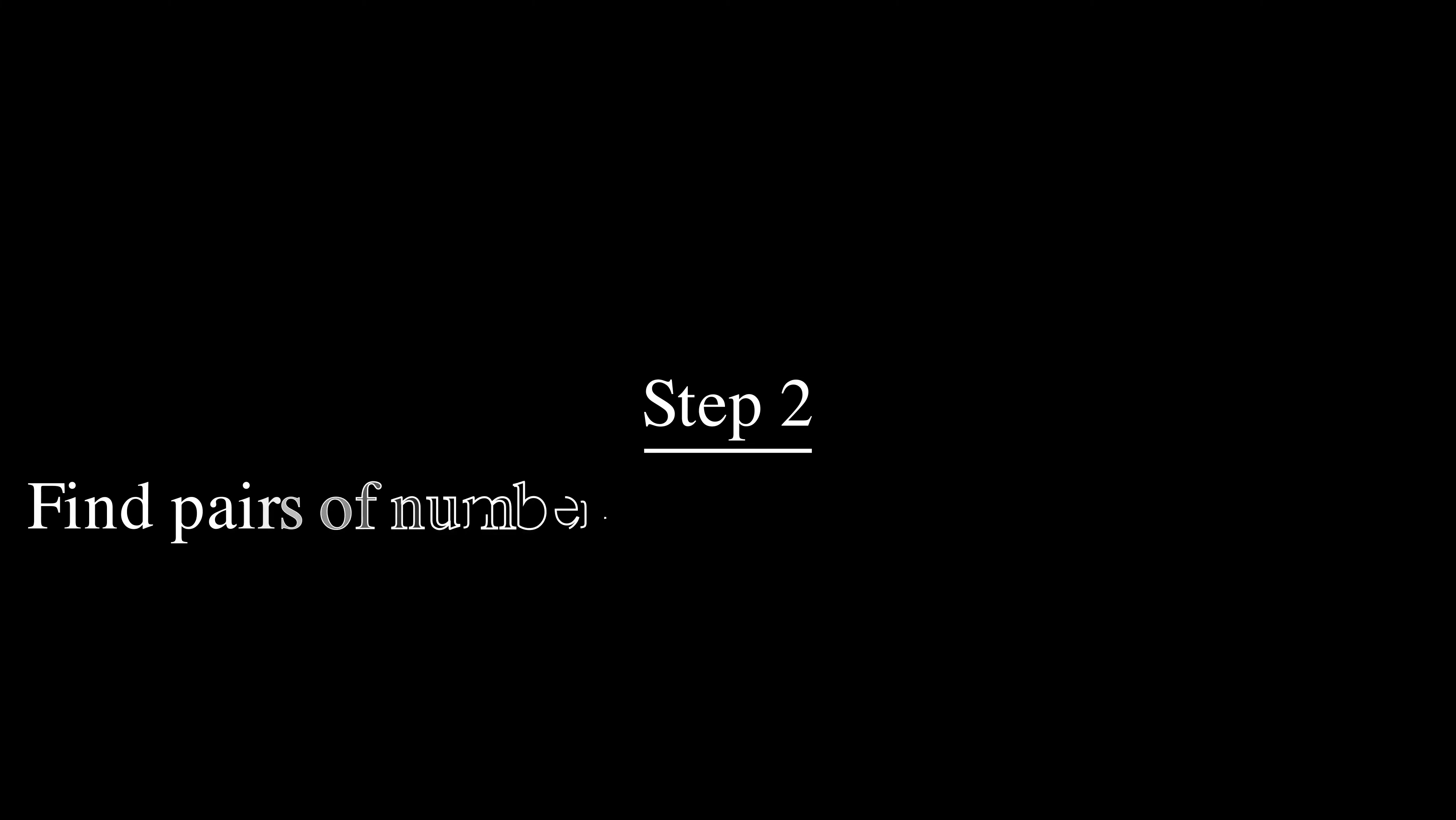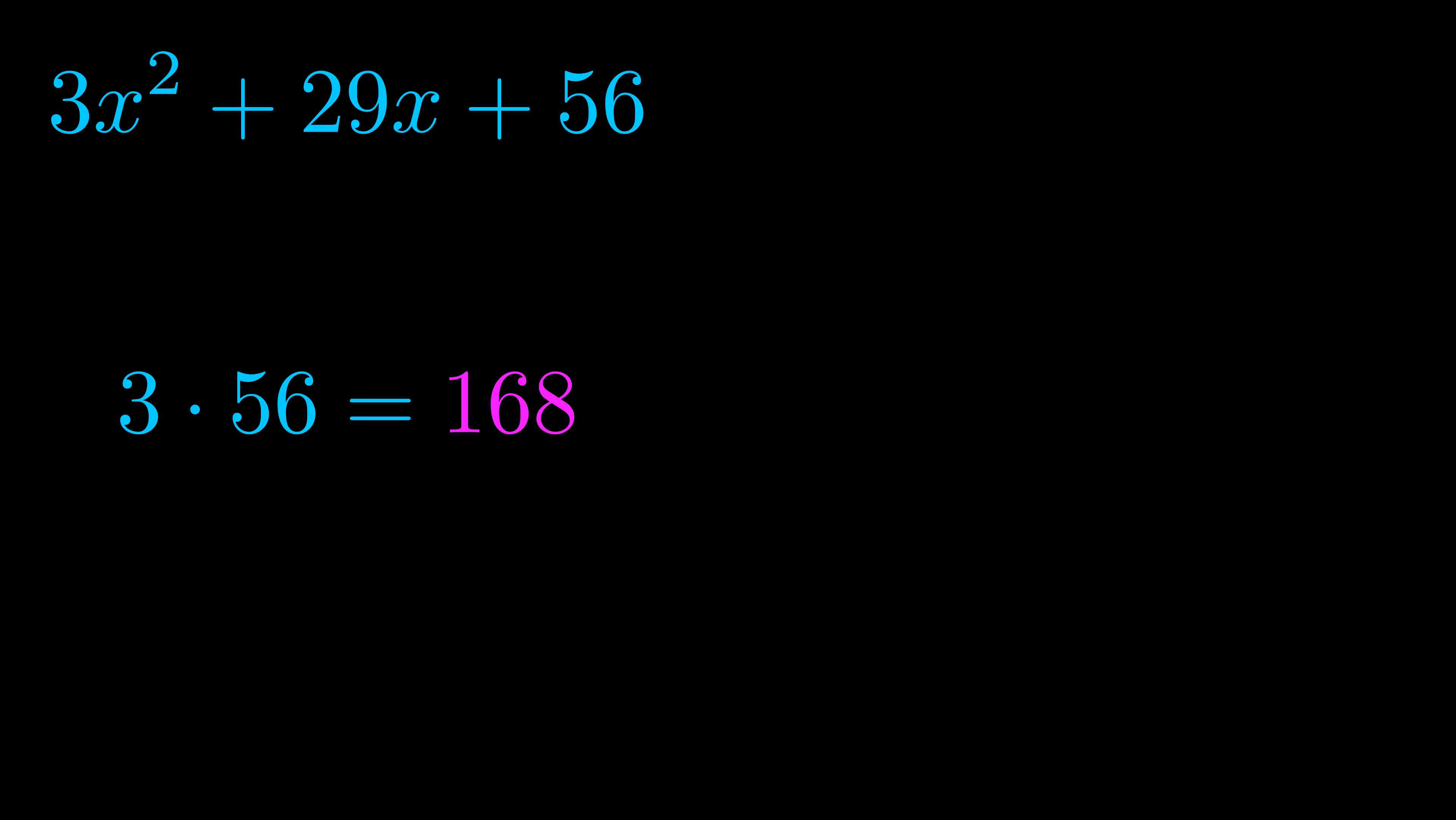Step two is to try to find all of the pairs which multiply to this number. Now turns out you don't really need to find all of them but go ahead and write down as many numbers as you can that multiply to the magenta value for now. Pause the video and resume when you're ready to continue.